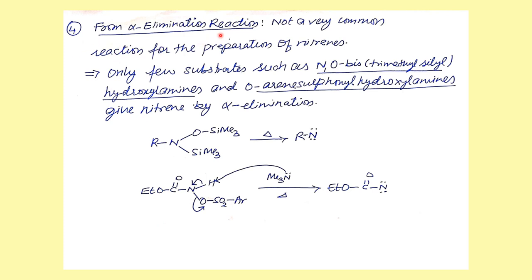Another less common method is alpha elimination. The substrate here is N,O-bis(trimethylsilyl)hydroxylamine — an hydroxylamine bearing TMS groups on both oxygen and nitrogen. When this TMS derivative of hydroxylamine is heated, nitrene is generated. Similarly, when aryl sulfonyl hydroxylamine (ArSO2-NH-OH) is used, the entire sulfonyl functional group stabilizes the nitrene intermediate.